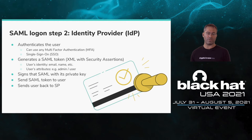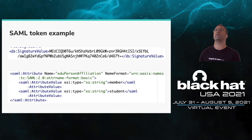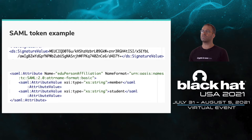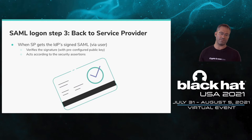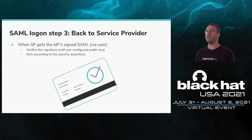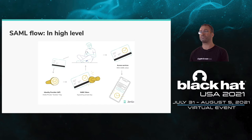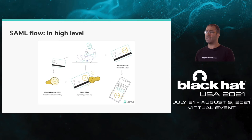The SAML token is sent to the user's browser and redirects them back to the SP — back to GitHub. The SAML is an XML document: the upper part shows the signature and the lower part contains user attributes, such as 'member' and 'student'. When GitHub receives that SAML from the browser, it first verifies the signature based on the pre-configured public key of the domain, then acts according to the security assertion. In summary: a SAML token is like a permit, the IDP has a stamp, and once it stamps that permit, I can present it to my SPs and get access.